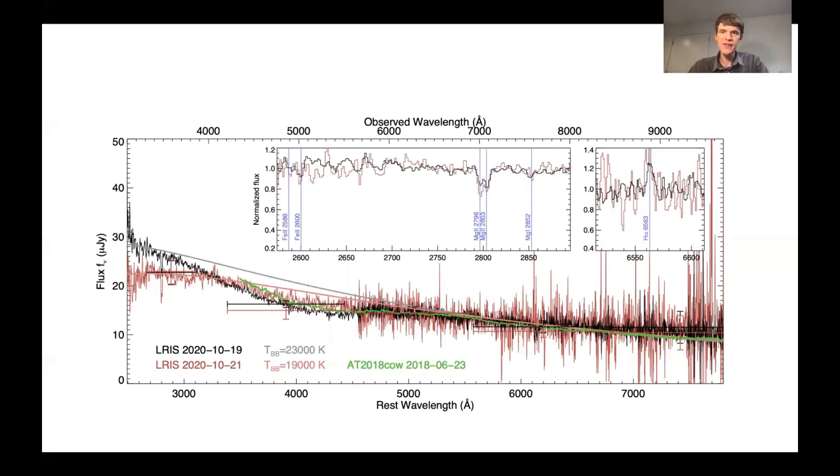The case that this was similar to AT2018COW was cinched when we were able to acquire a spectrum at Keck. The spectrum is largely featureless, much like AT2018COW was at peak and much like the koala was at peak, but critically it showed a series of narrow absorption lines that pinned down the redshift as about 0.24, quite distant and therefore quite luminous. Furthermore, the spectral shape showed the same sort of broad, unidentified features in the blue that were also seen in AT2018COW. This led us to be fairly confident that we had indeed found a similar type of object.